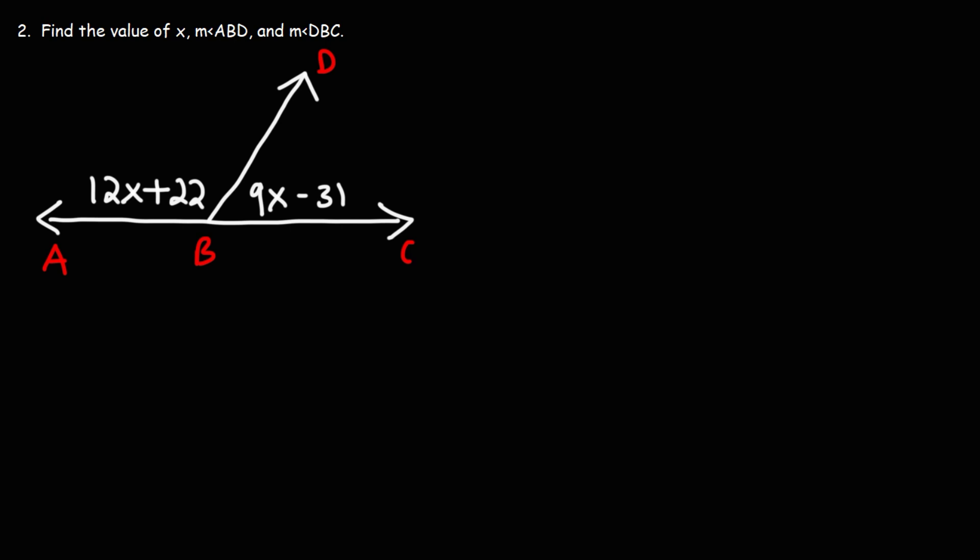Find the value of X and the two angle measures. Now this one is similar to the last problem, but it's a little different. Notice that these two angles, they form a linear pair. They make up a straight line, so to speak. Therefore, those two angles are supplementary. They add up to 180.